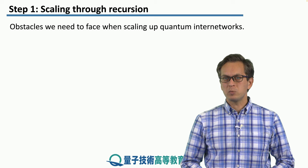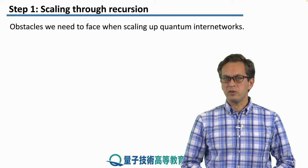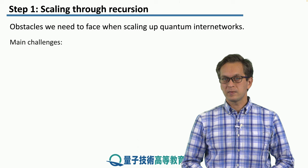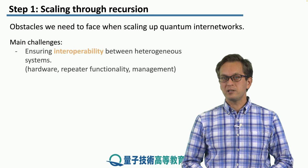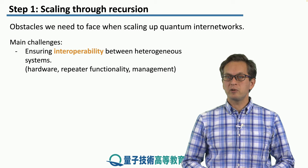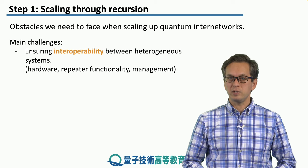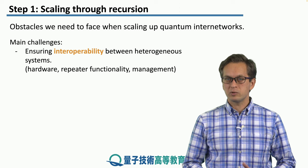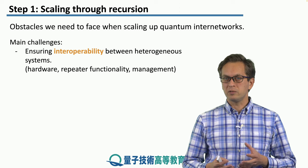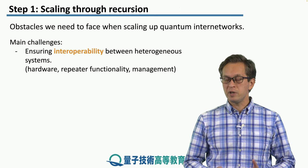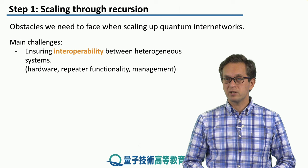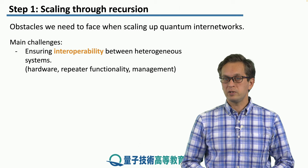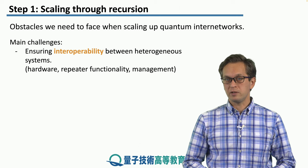Let's think about the obstacles we need to face when scaling up quantum internet networks. The main challenges are that we have to ensure interoperability between heterogeneous systems. All of these networks will run on different hardware, and the repeaters will have different functionality.